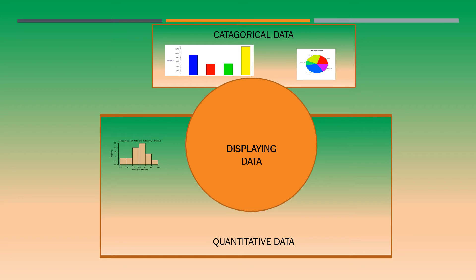A categorical variable places each individual into a category, such as male or female. A quantitative variable has numerical values that measure some characteristic of each individual, such as height in centimeters or age in years. Exploratory data analysis uses graphs and numerical summaries to describe the variables in the data.